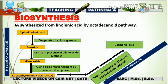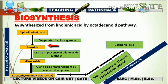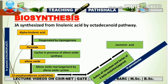Now let's talk about the biosynthesis of Jasmonic Acid. JA is synthesized from Linolenic Acid, a type of fatty acid, by the octadecanoid pathway. Alpha-Linolenic Acid acts as the precursor molecule. First, it is oxygenated by the enzyme lipoxygenase to form a peroxide. Then cyclization occurs in the presence of Allene Oxide Synthase, converting the peroxide to an Allene Oxide. Next, Allene Oxide Cyclase catalyzes rearrangement to produce 12-oxo-phytodienoic acid, abbreviated as OPDA.